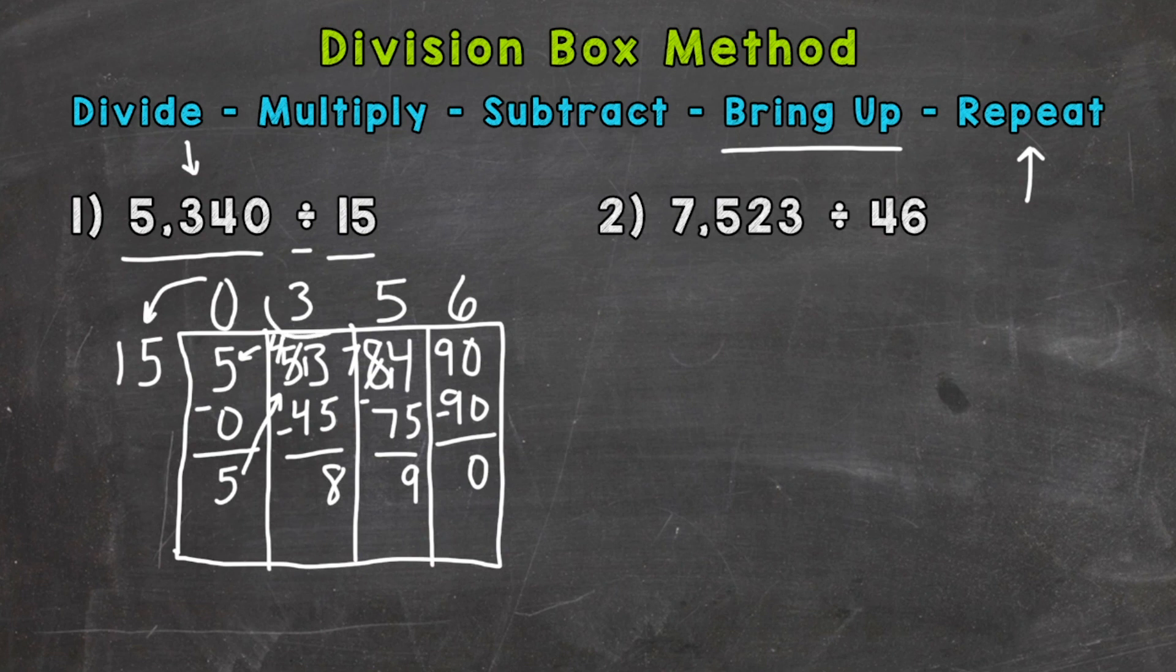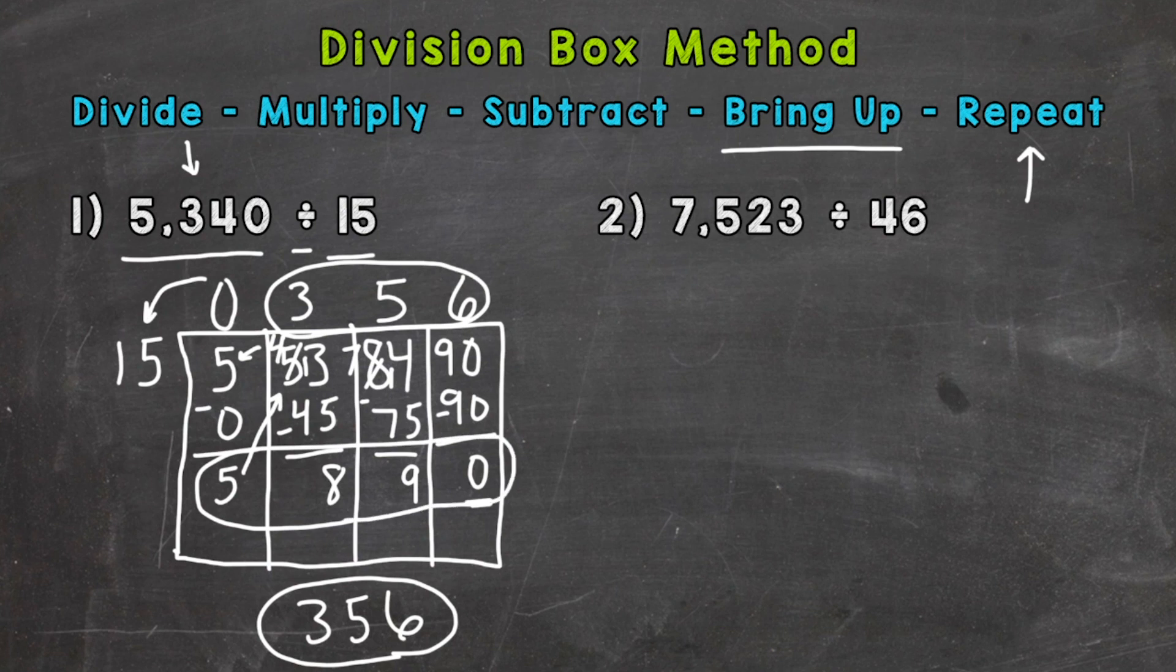So our answer is 356. So I will rewrite it down here. 356. This number here is always going to show what our remainder is. And in the case of number 1, we don't have one. Now, a common mistake is to look down here and think that this is our answer. 5,890. Which that is not true. Always look up top for your answer.